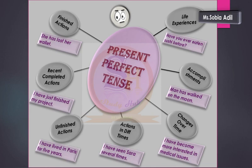Third, you can use the present perfect tense for unfinished actions, for example: 'I have lived in Paris for five years.' Fourth, for actions that happened at different times, for example: 'I have seen Sarah several times' — 'several times' tells you the action happened at different times. Fifth, it also shows changes over time, for example: 'I have become more interested in medical issues' — your habits and choices change with the passage of time.